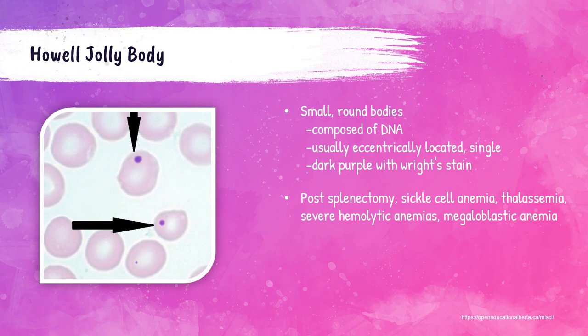Howell-Jolly bodies are small, round, dark blue, eccentrically located bodies in the red blood cell. These can be seen in patients that have had their spleen removed, those with sickle cell anemia, thalassemias, very severe hemolytic anemias, and those with megaloblastic anemias.